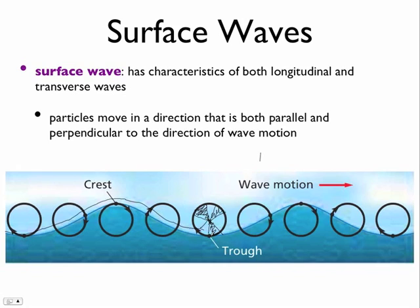The particles actually move both ways. You've got the perpendicular-to-motion part — the up and down — and then you've got the parallel part where they're just staying in the same spot, moving kind of like a longitudinal wave. So that's surface waves.